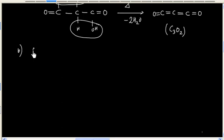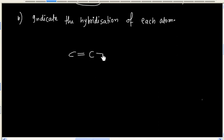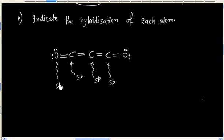Next part is: Indicate the hybridization of each atom. So we have carbon and oxygen. Oxygen will have 2 lone pairs of electrons also. So this is sp hybridized. This carbon has 2 groups, this is also sp hybridized. This is sp hybridized, this is sp hybridized. Oxygen is having 3 groups, sp2 hybridized. And this is sp2 hybridized, this is sp2 hybridized.